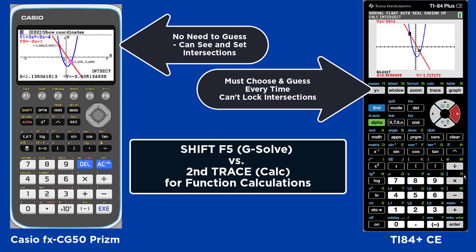We hope you've enjoyed this comparison of the Casio CG50 Prism graphing calculator and the TI 84 Plus CE graphing calculator.